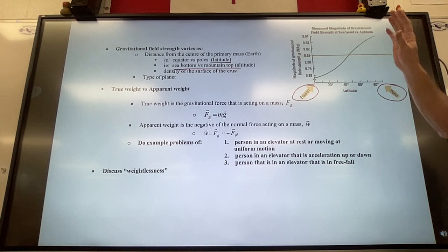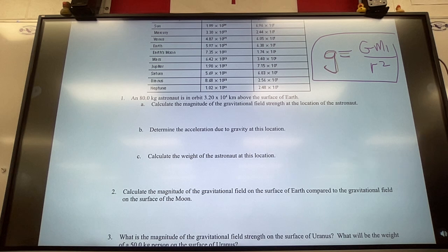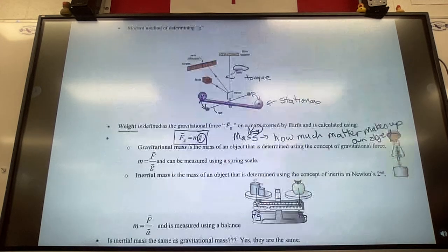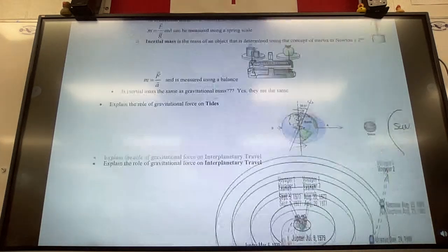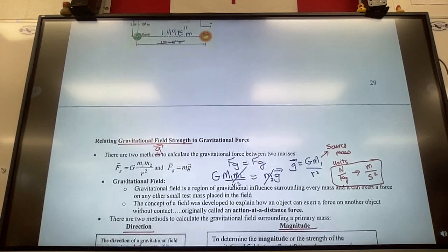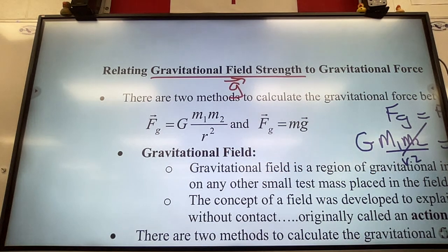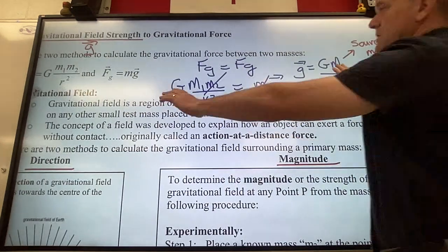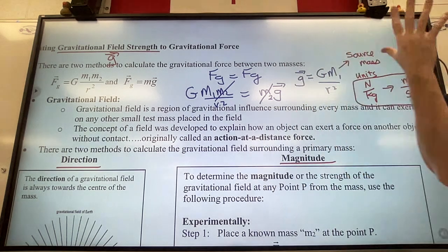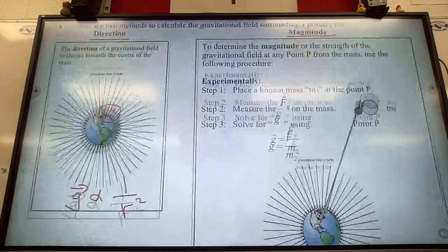Today we're looking at gravitational field strength. We didn't get enough time for those questions, so we'll come back to them. I want to do number one again for those who weren't here. The first three pages dealt with the universal law of gravitation — you really only need to know that formula and the one for gravitational field strength. Those are the only two formulas in chapter four, applied in a couple of different ways.